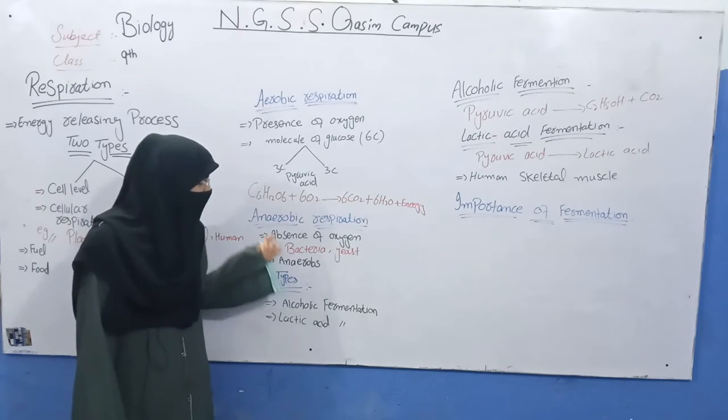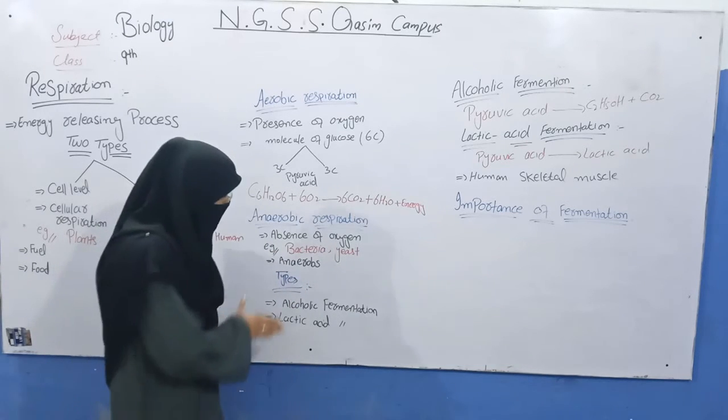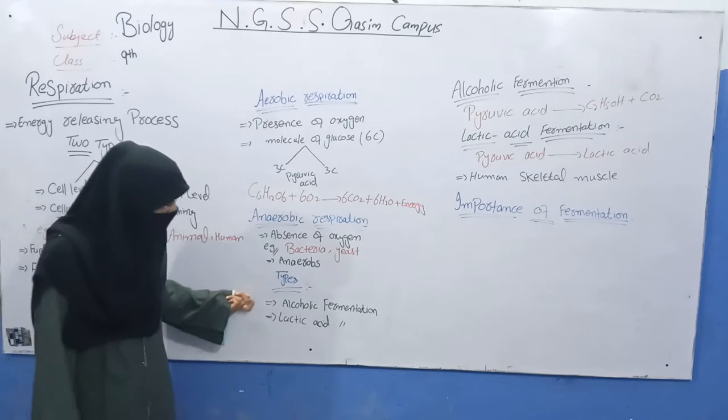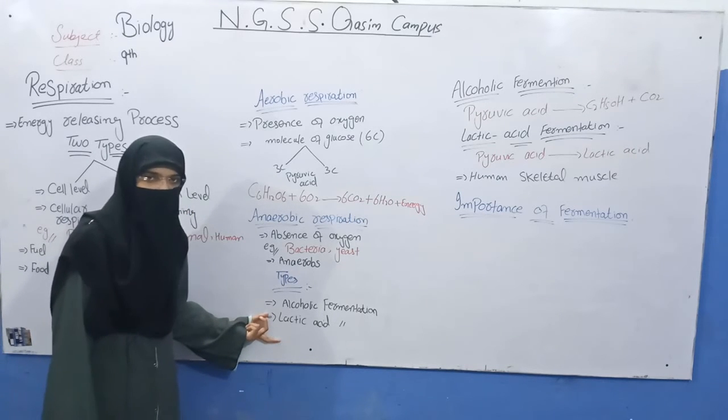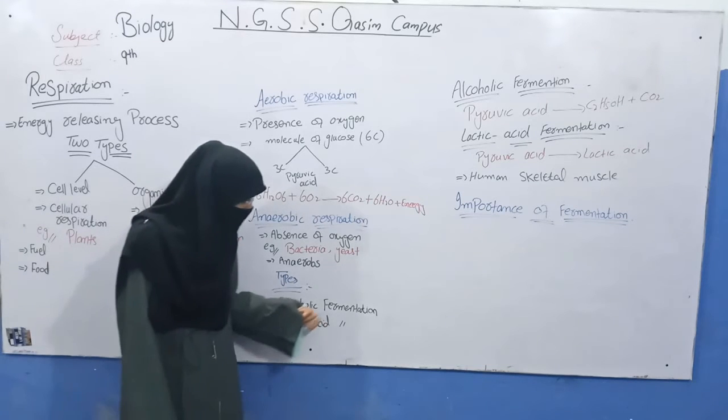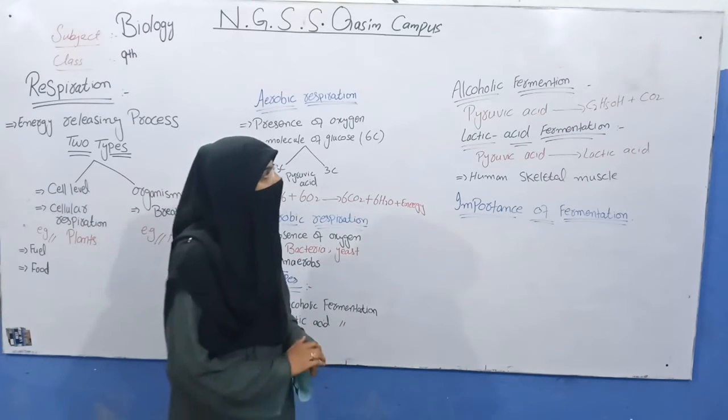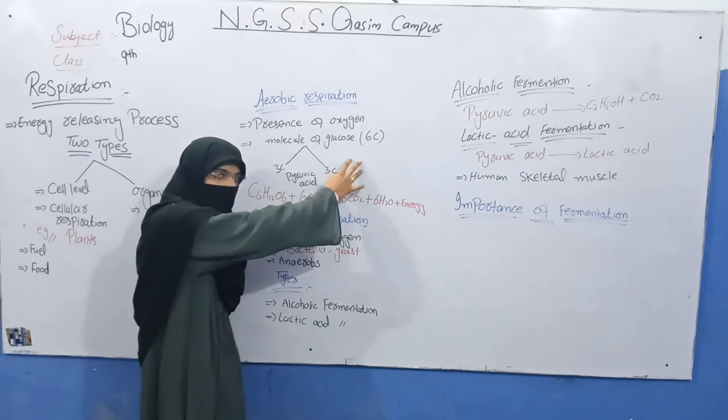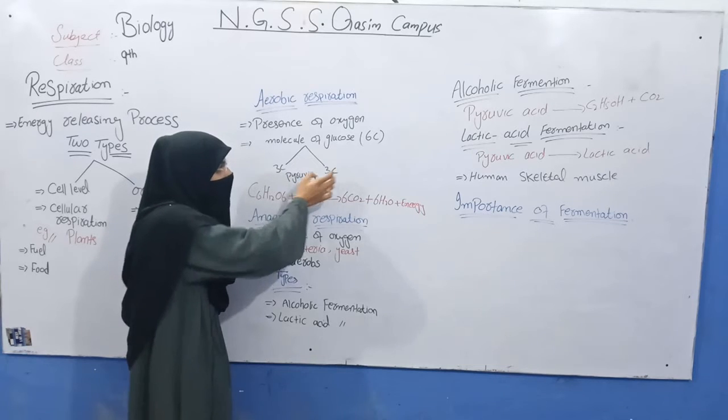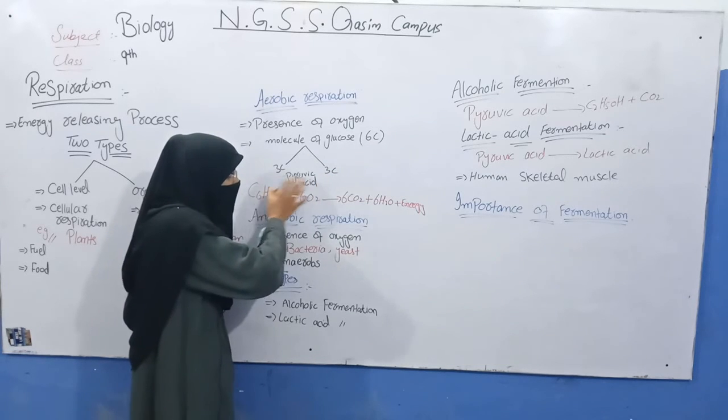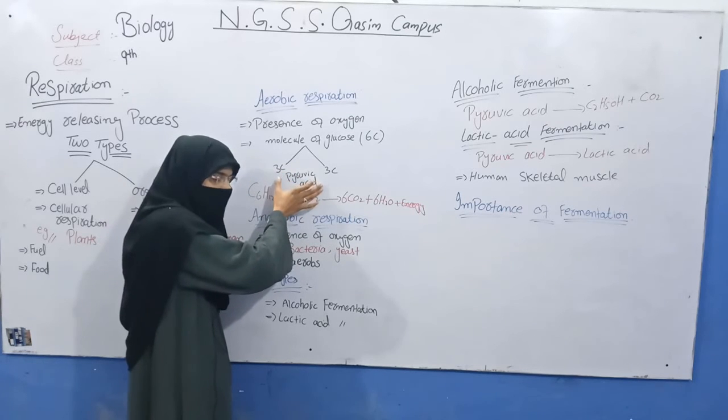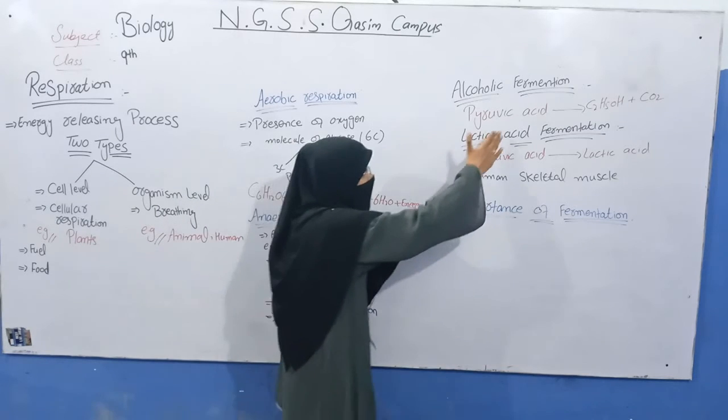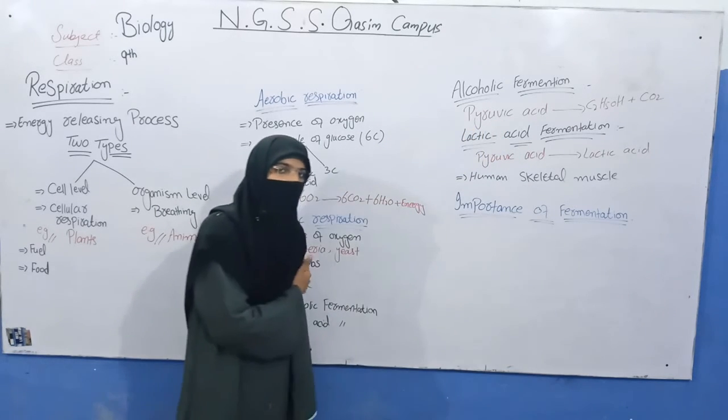The organisms that perform anaerobic respiration are called anaerobes. This is similar to aerobic respiration where glucose breaks down into pyruvic acid. The 6-carbon compound molecules break down into 3-carbon compounds called pyruvic acid.